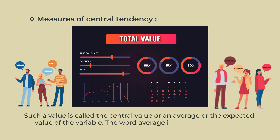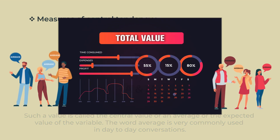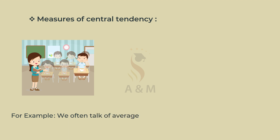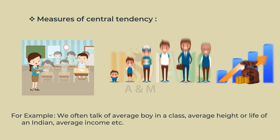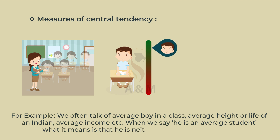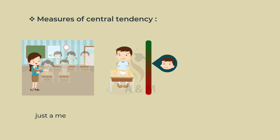The word average is very commonly used in day-to-day conversations. For example, we often talk of the average boy in a class, average height or life of an Indian, average income, etc. When we say he is an average student, what it means is that he is neither very good nor very bad — just a mediocre type of student.